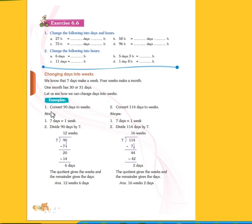See here, example: convert 90 days to weeks. What we have to do here is convert 90 days into weeks. We know that seven days equals one week. Then second step, divide 90 days by 7.